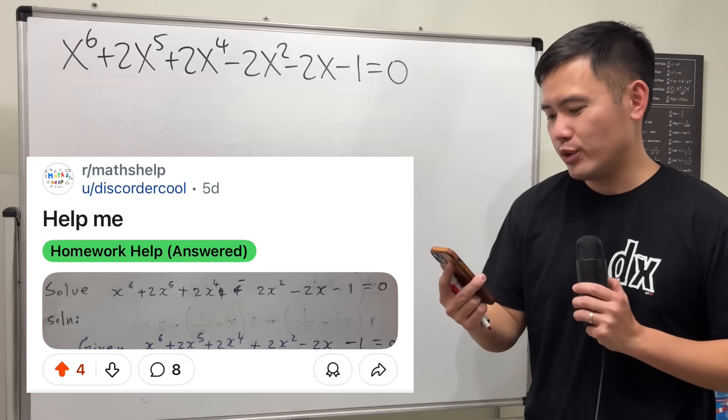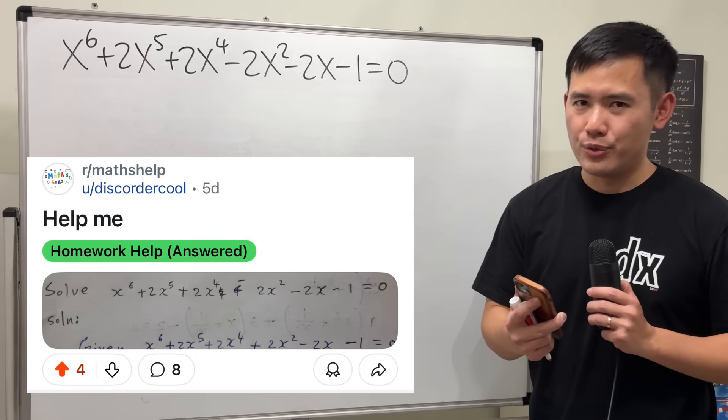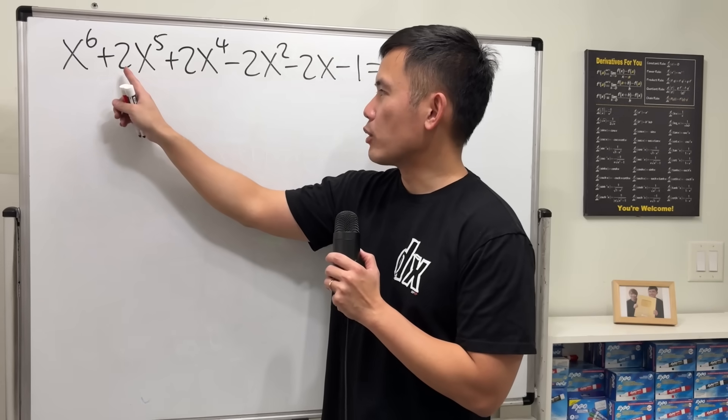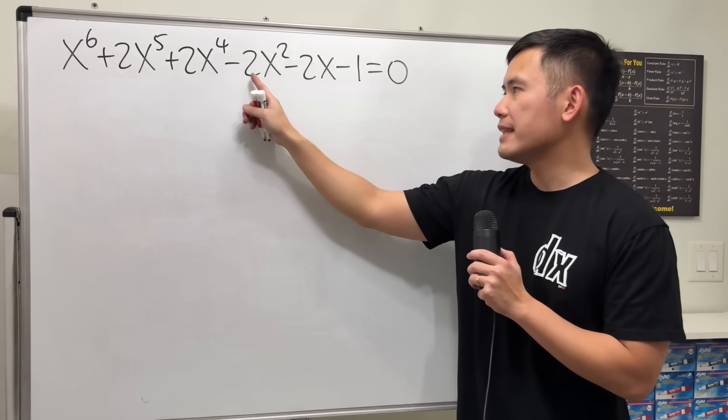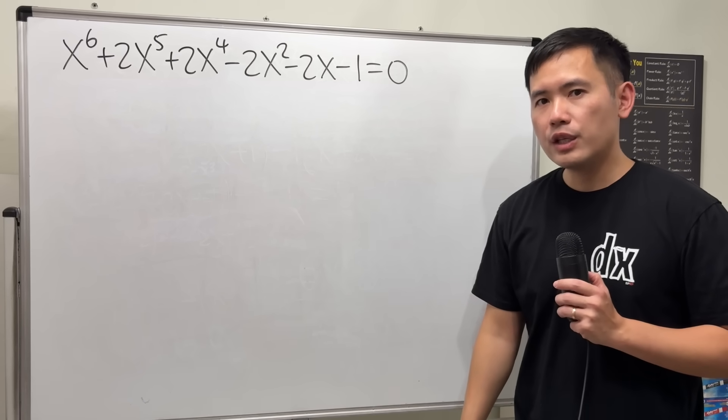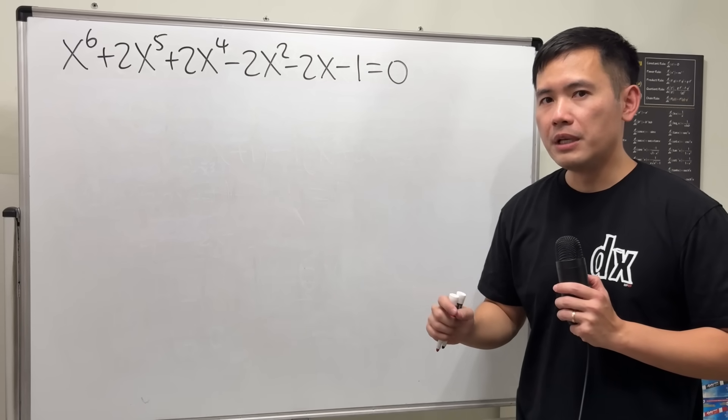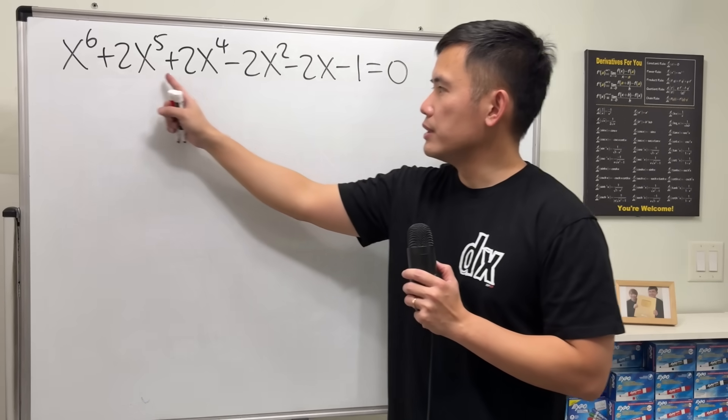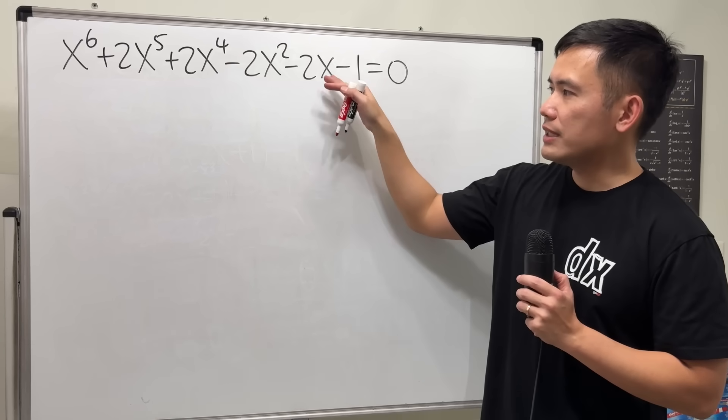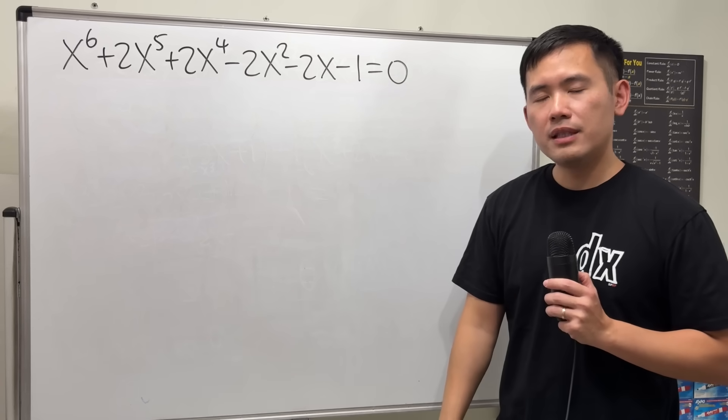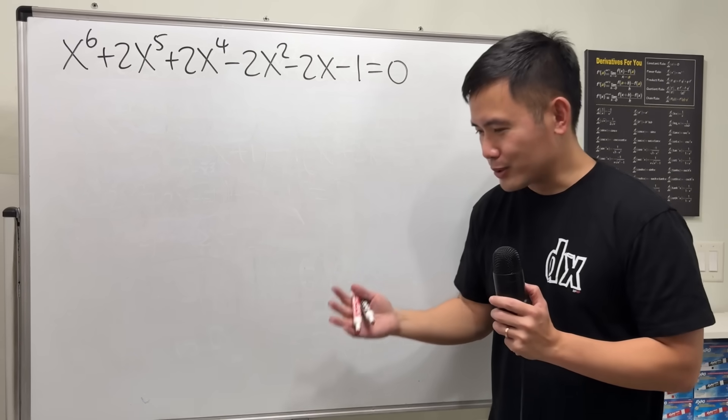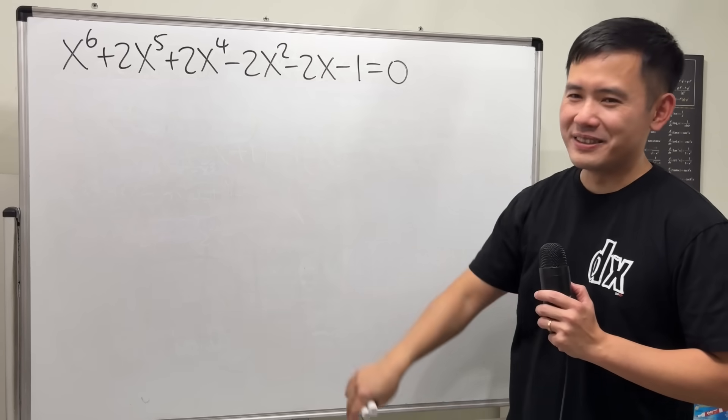Okay, here we have this 6-degree polynomial equation, and let me tell you, this is not easy. We have x^6 + 2x^5 + 2x^4 - 2x^2 - 2x - 1 = 0. And yes, we can use the rational zero theorem and see that 1 is a solution to this equation, therefore x - 1 is a factor, and we can use that to break it down. But that will be very long. So instead, let me show you, after multiple tries, how I end up being able to factor this.